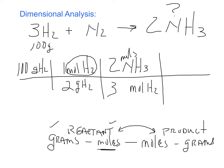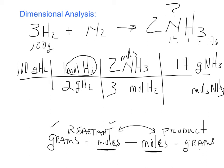Now I need to go to grams, so I put grams of ammonia on top and moles of ammonia on the bottom of the next box. The molar mass of ammonia: nitrogen weighs 14 and hydrogen weighs 1, with three hydrogens — that equals 17 grams per mole. So 1 mole of ammonia = 17 grams. The problem is now fully laid out and I've arrived at grams of ammonia, which is what they asked for. Now I cross-cancel all like units above and below the number line: grams of hydrogen cancel, moles of hydrogen cancel, moles of ammonia cancel — leaving only grams of ammonia.